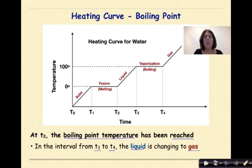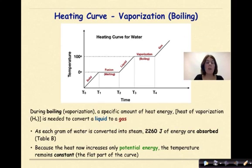During boiling, otherwise known as vaporization, a specific amount of heat energy, the heat of vaporization HV, is needed to convert a liquid to a gas. As each gram of water is converted into steam, 2,260 joules of energy are absorbed. We get that from reference table B. At T3, because the heat now increases only the potential energy, the temperature remains constant.